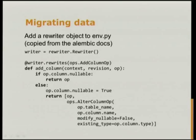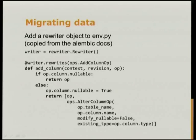Alembic has the concept of a rewriter. You can override how it writes an add column operation. If the column is nullable, just do it. Otherwise, change the column to be nullable and add an alter column operation after. This goes into our env.py file — we only need to do it once, and thereafter all our not-nullable columns get rendered with two statements. Rewriters are also useful for other things such as setting permissions when you add a new table.